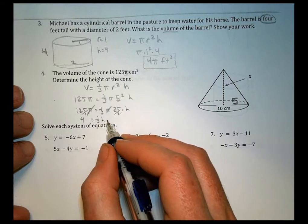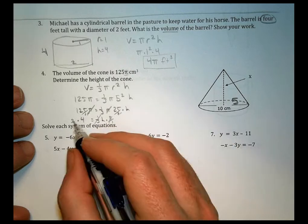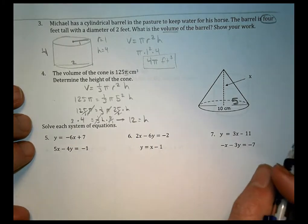This is divided by 25, divided by 25. Now I get the h by itself. I multiply both sides by 3. So this cancels out. 3 times 4 is 12. And 12 equals h.